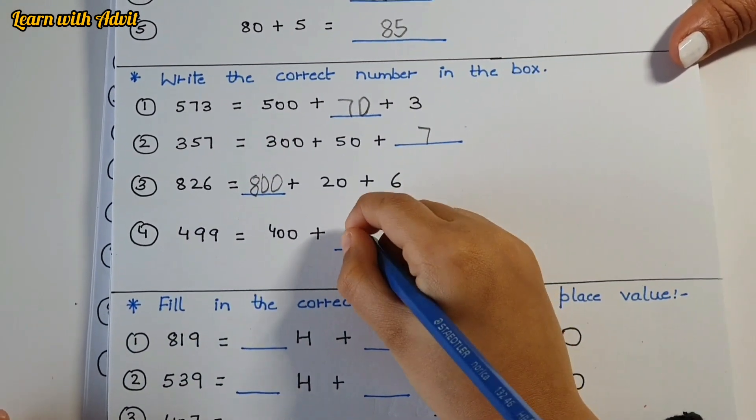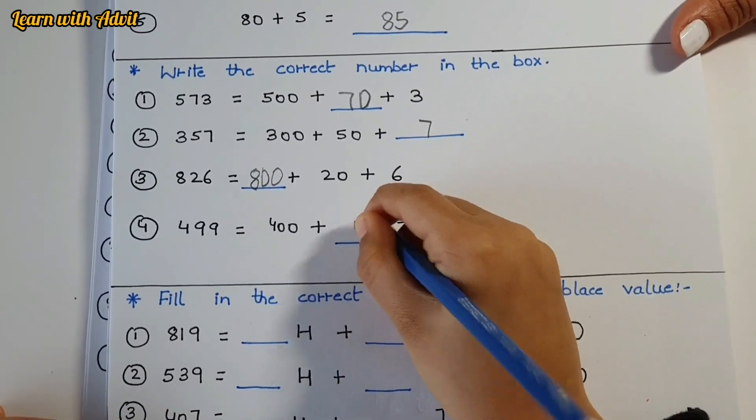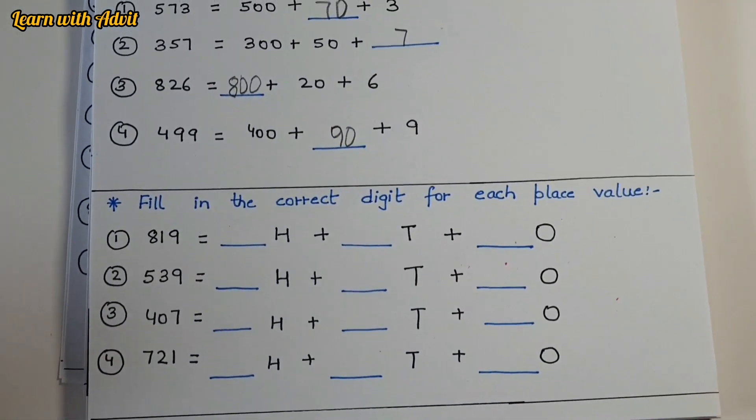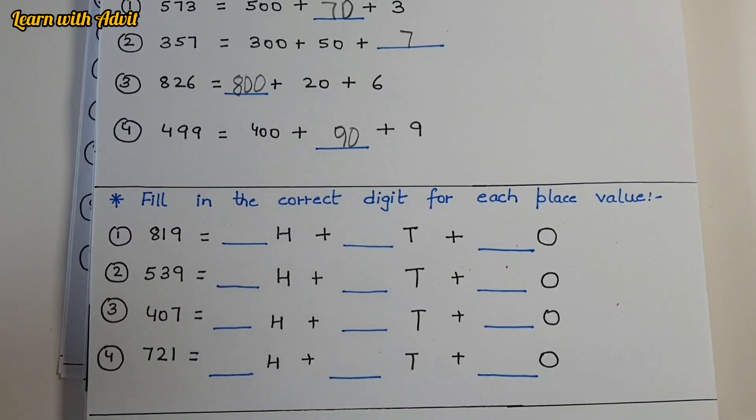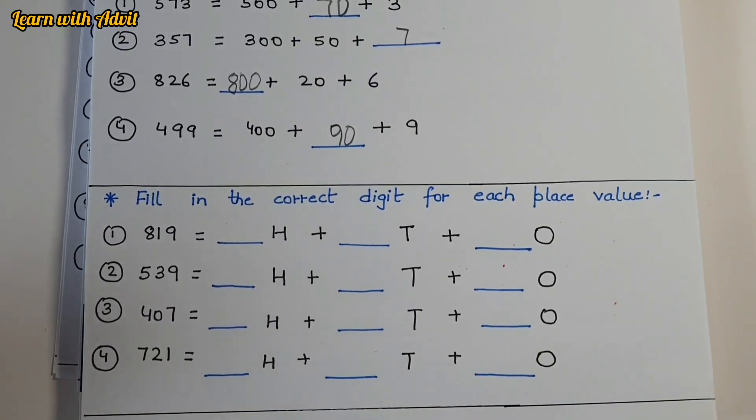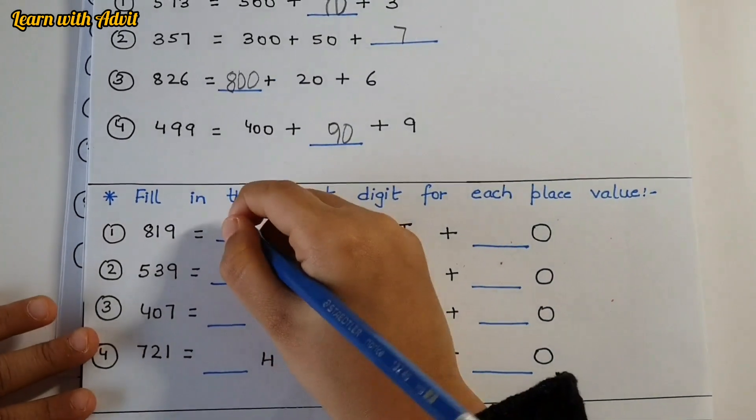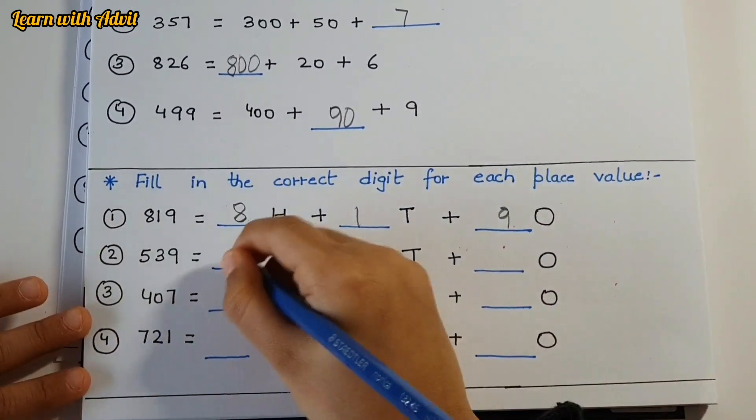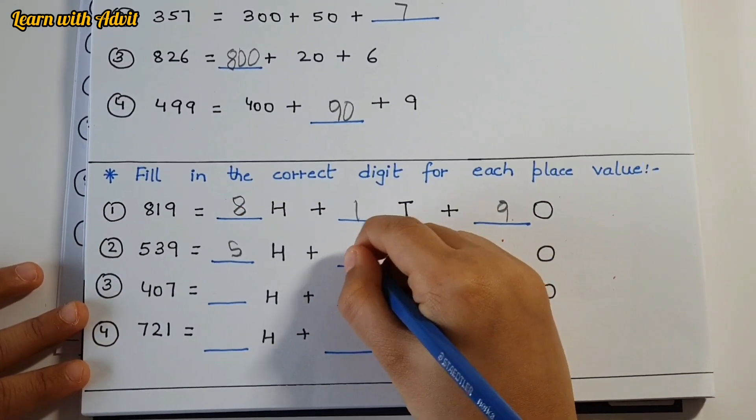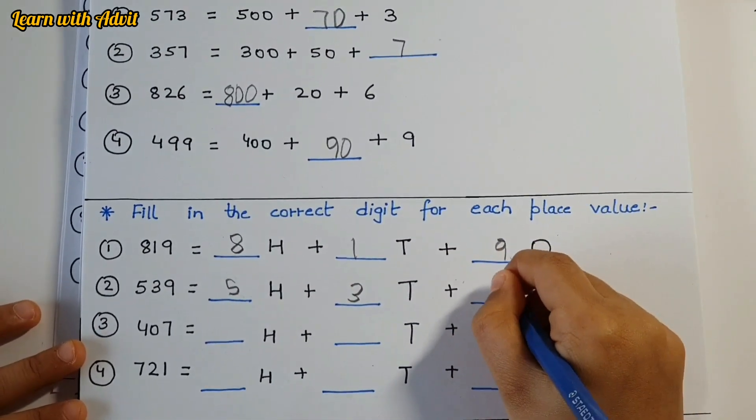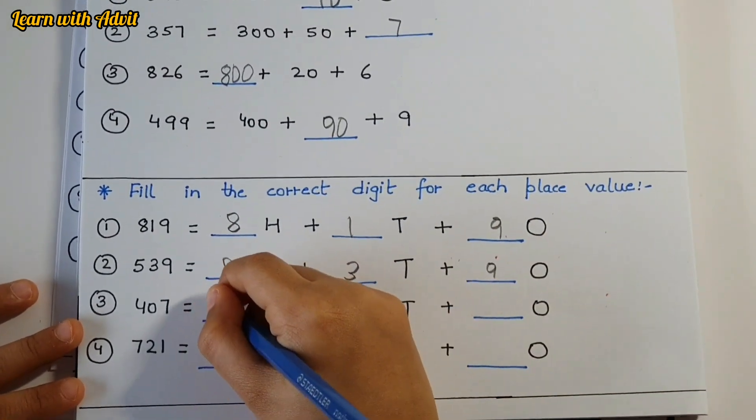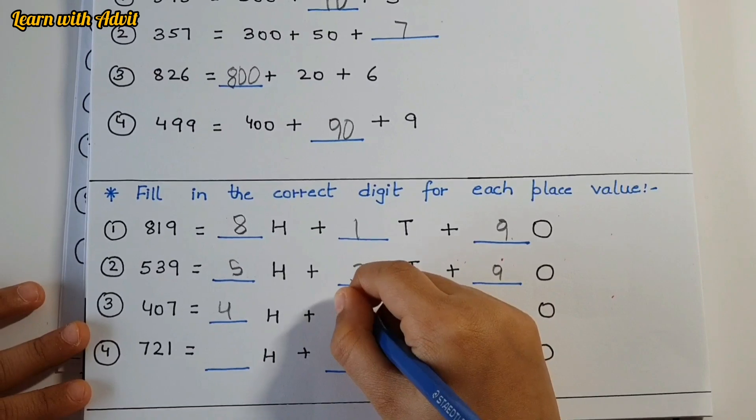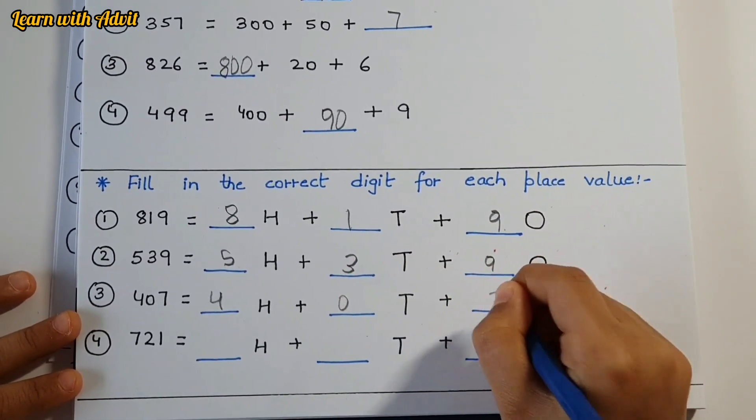Now here you have to write the position like place value. What is correct? Write it down: 8, 1, 9, good. 5, 3, 9, 9, good. 4, 0, 7, very good. 7, 2, 1, good job.